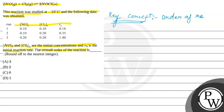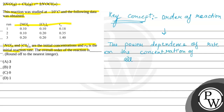Order of reaction represents the power dependence of rate on the concentration of all the reactants. It is the power dependence of rate on the concentration of all the reactants.